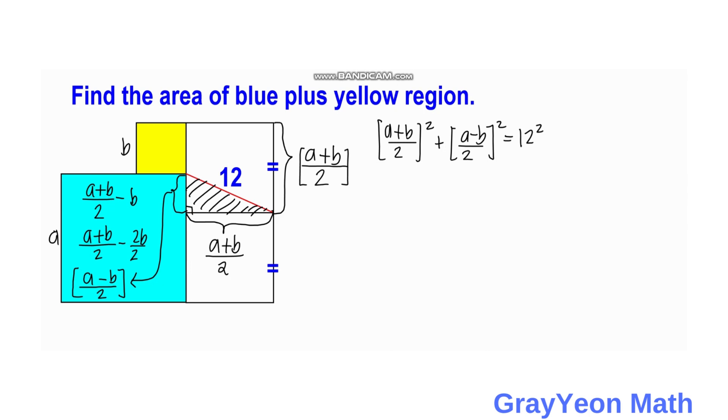So next is we simply square this numerator. Then we have A plus B squared over 4. The denominator also to be squared.